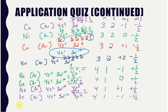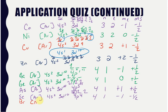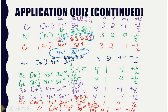Bromine [Ar] 4s² 3d¹⁰ 4p⁵ — last electron in m sub l=0, aimed down: n=4, l=1, m sub l=0, m sub s=−½. Krypton [Ar] 4s² 3d¹⁰ 4p⁶ — last electron in m sub l=+1, aimed down: n=4, l=1, m sub l=+1, m sub s=−½. Note: you cannot simply abbreviate krypton as [Kr] with nothing after it — you must show the last orbital filled.